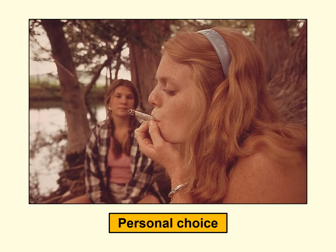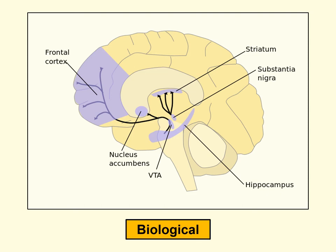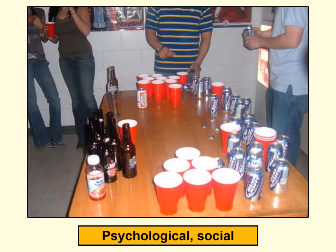We often talk about drugs as a personal choice, and clearly the decision to use or not use drugs is a choice each individual can make. At the same time, we understand that decisions about using drugs are influenced by various aspects of each individual's neurobiology — we'll spend a fair bit of time this semester talking about this. Psychology and social factors can also play a role in decisions about which drugs to use or how to use them.